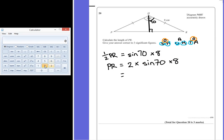So, 2 multiplied by 70 degrees sine multiplied by 8 gives us an answer of 15.03508.